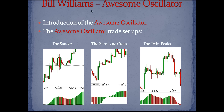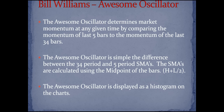The Bill Williams Awesome Oscillator. We'll take a look at how it's made up and then we'll take a look at some trade setups — we'll look at the saucer, the zero line cross, and the twin peaks. The Awesome Oscillator determines the market momentum at any given time by comparing the momentum of the last five bars to the momentum of the last 34 bars. It is simply the difference between a 34-period and a 5-period simple moving average, calculated using the midpoint of the bars — the high plus the low divided by 2, not the close.